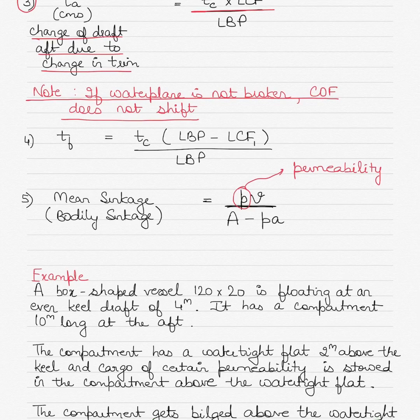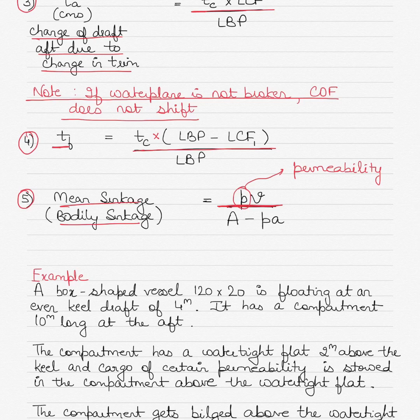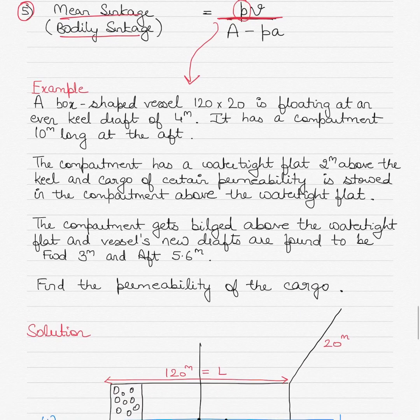The change of draft aft due to change in trim can be found by multiplying the total change in trim by the longitudinal center of flotation divided by the length between perpendiculars. Make sure that if the water plane is not broken, your center of rotation will not shift. The change of draft forward can be found by multiplying the change in trim by the difference between the length between perpendiculars and the new LCF, divided by the length between perpendiculars. Mean sinkage equals permeability times the volume of the bilge compartment, divided by the intact water plane area — which is the total water plane area minus permeability multiplied by the area of the compartment.